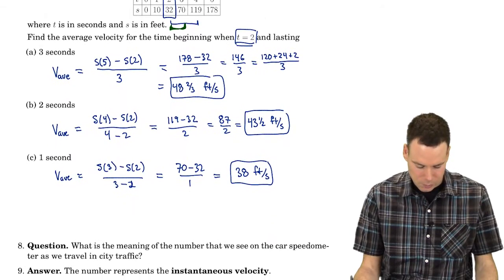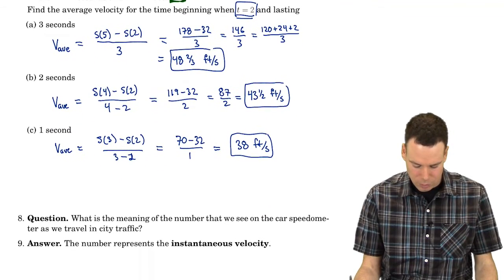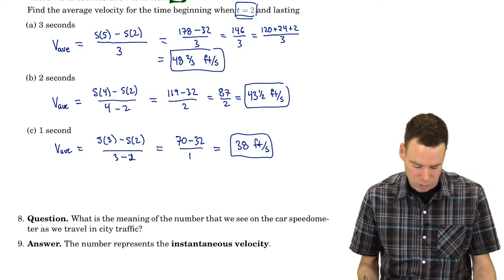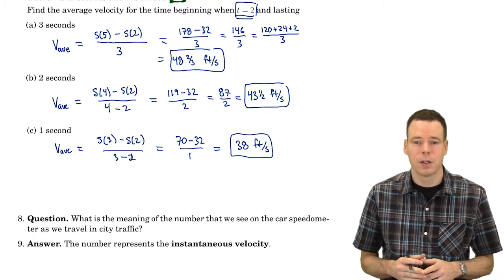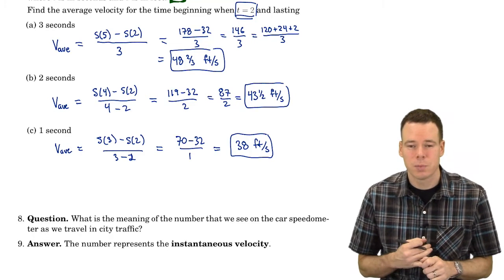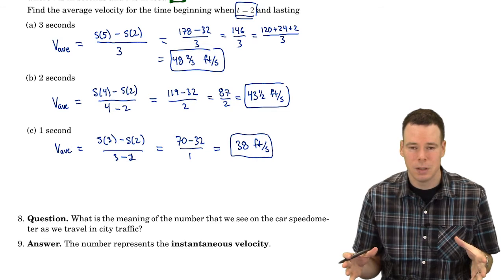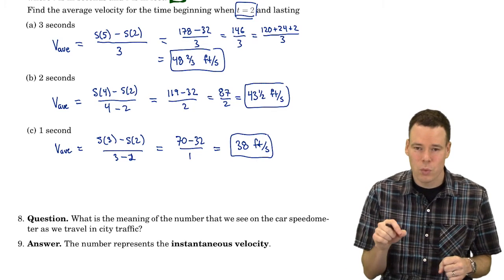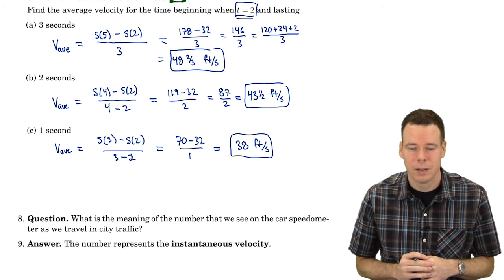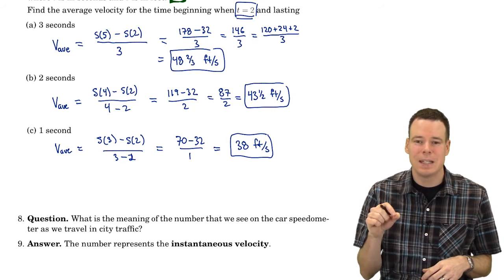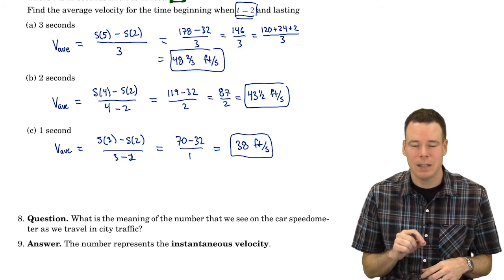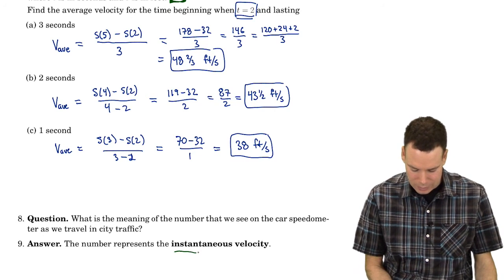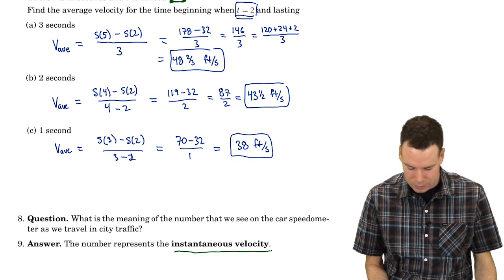What is the meaning of the number on your car speedometer as you're traveling through city traffic? Your speedometer is not telling you an average velocity — it's telling you your velocity right at the moment you're looking at it. It's telling you your instantaneous velocity.